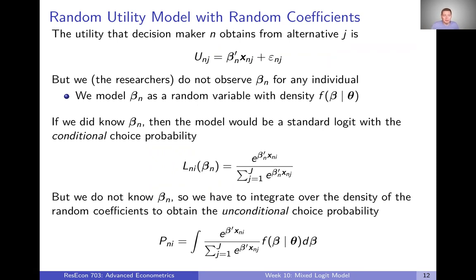What we can do is model beta sub N as being a random variable with density given by F of beta, where that density is defined by some parameters theta.